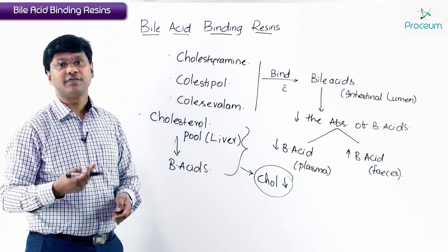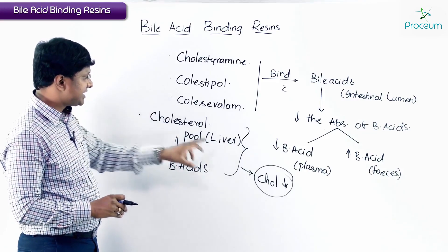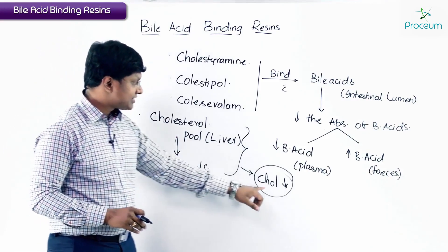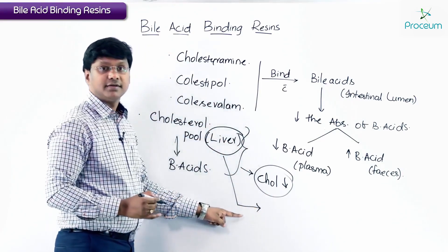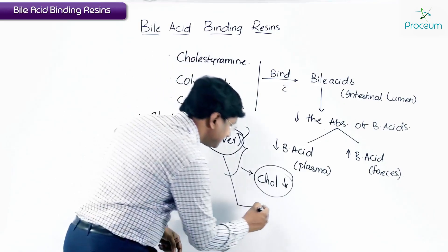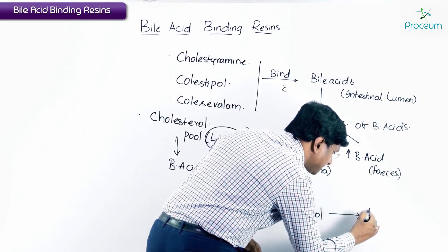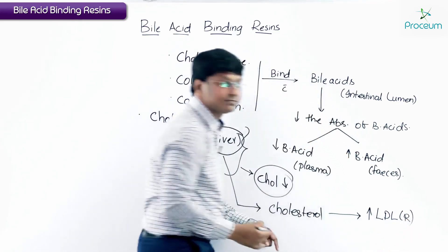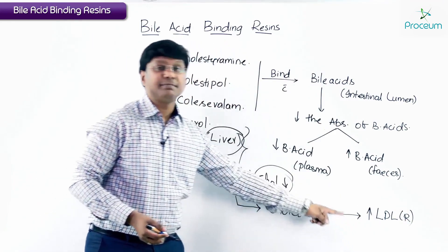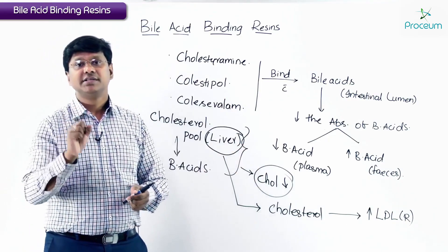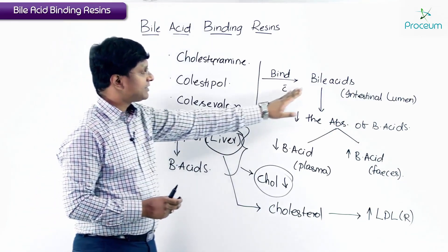The liver will then acquire cholesterol from the plasma by increasing the LDL receptors. Whatever cholesterol is in the liver is being converted into bile acids, so cholesterol content in the liver is reduced. Once LDL receptors are increased on the liver, they will cause the reabsorption of cholesterol into the liver.